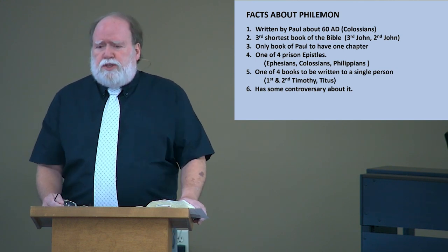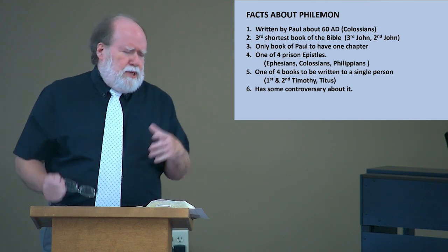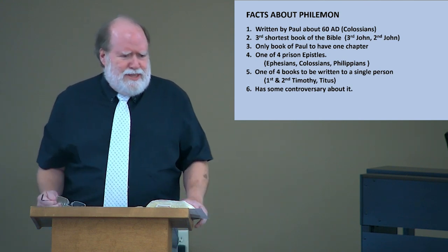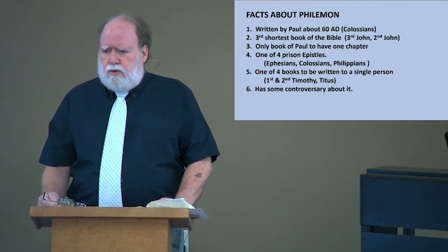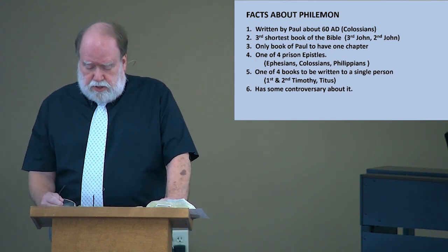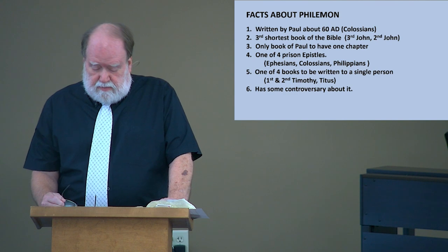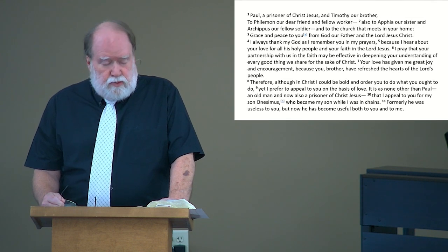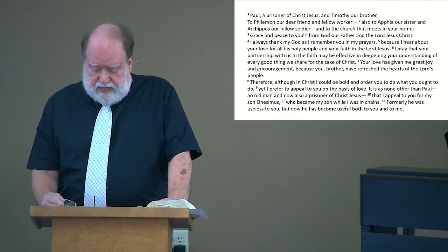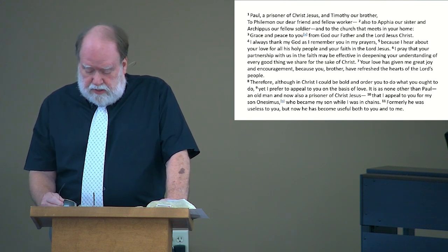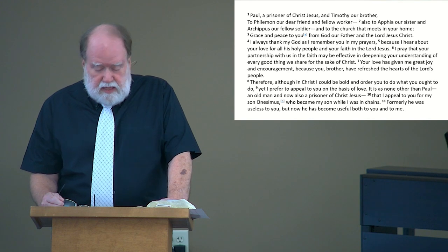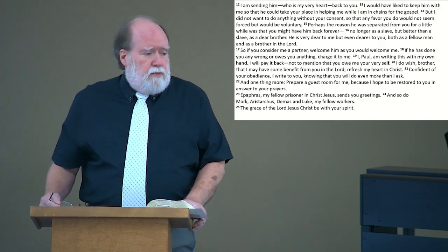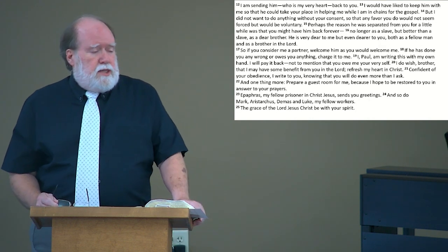Philemon has a house church, which is not unusual because in that time there really were no churches. There were temples and synagogues, but there were no churches. So most of the churches for the new Christian faith were house churches. His wife, the first name that comes up, was Apphia, and probably his son was Archippus, which he names in the book. And when we look at verse 16, we will find out that Philemon was a slave owner.